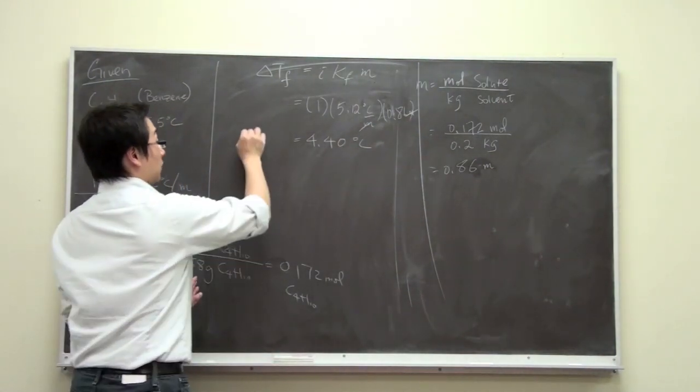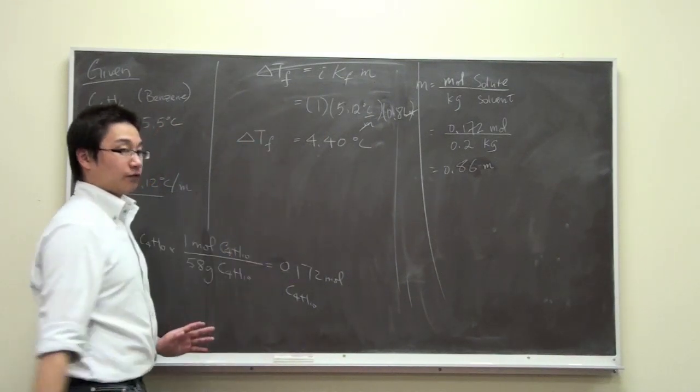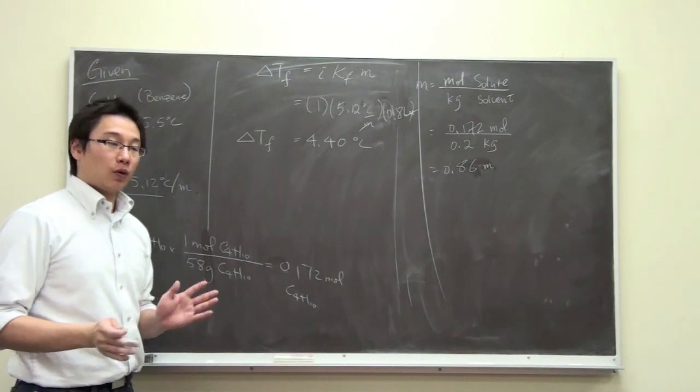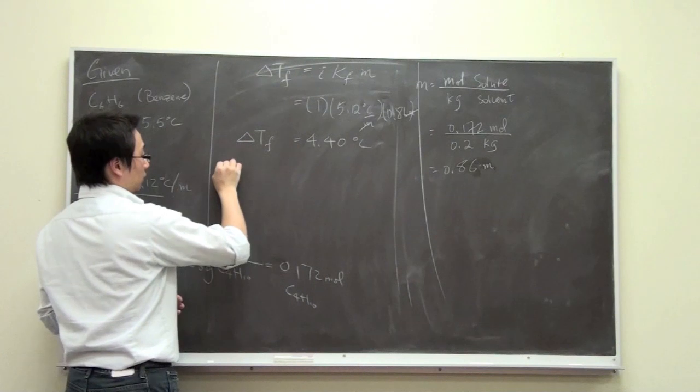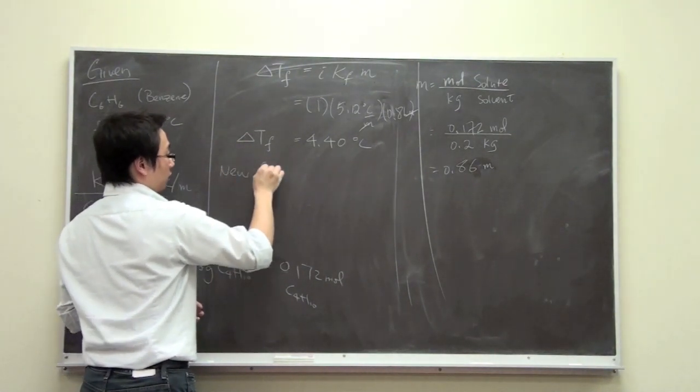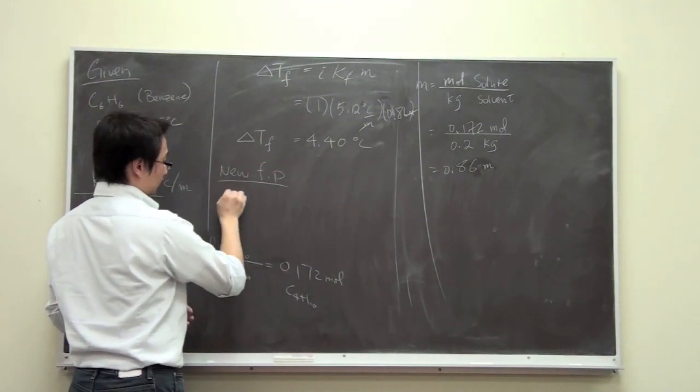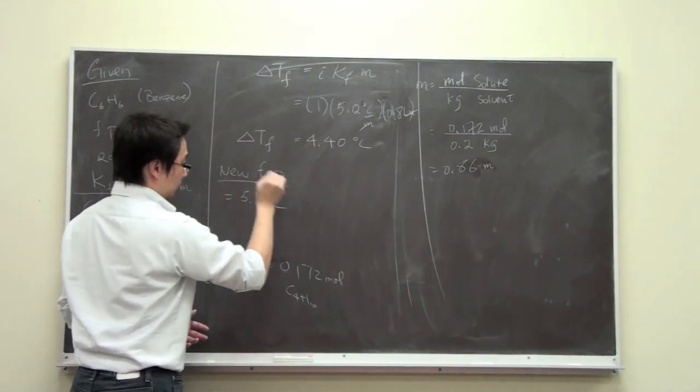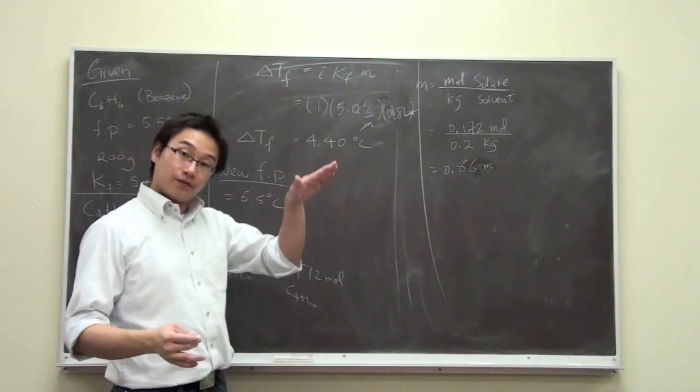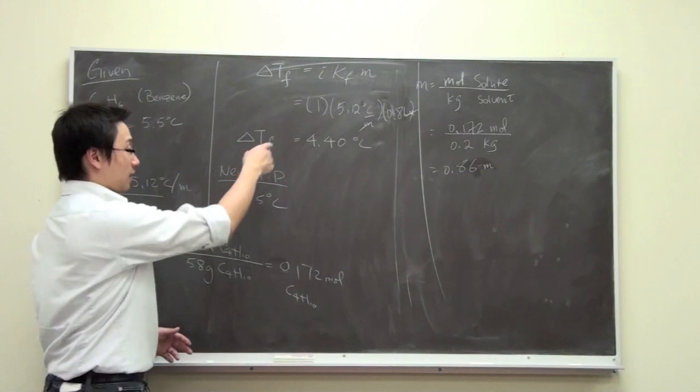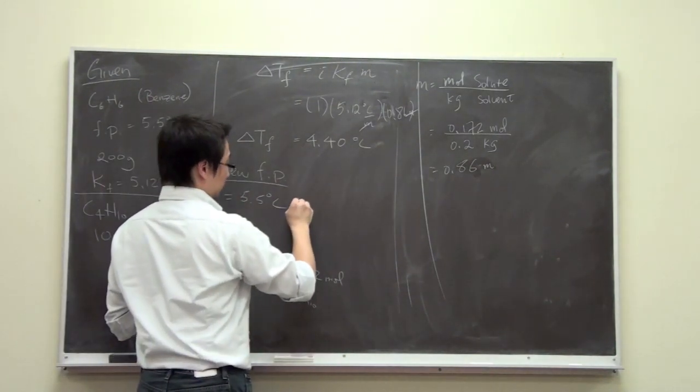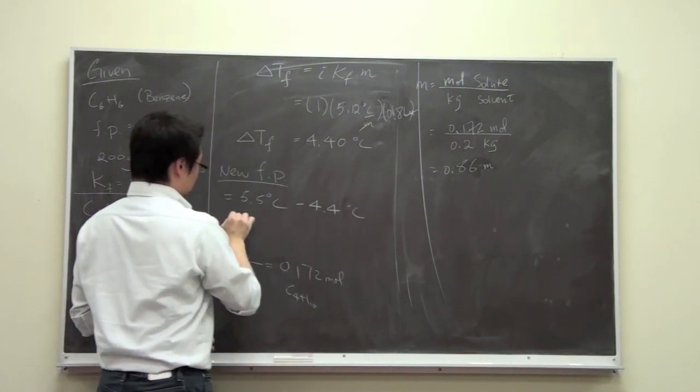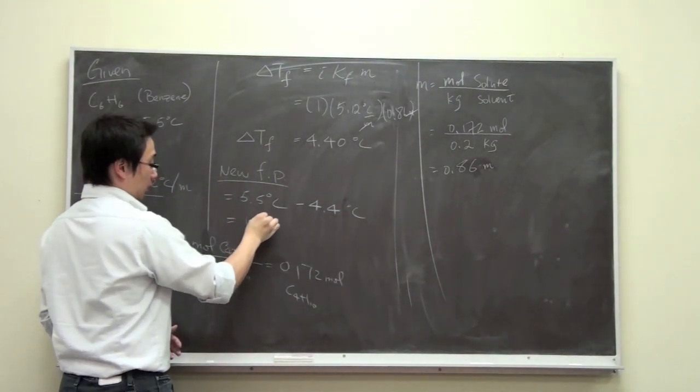Now remember, this is just the change of the freezing point, not the new freezing point. In order to find out the new freezing point, we have to calculate. The new freezing point is - well, the original is 5.5 degrees Celsius, and since it is a freezing point depression, it is decreased by 4.4 degrees Celsius. So we subtract, minus 4.4 degrees Celsius, we have 1.1 degrees Celsius.